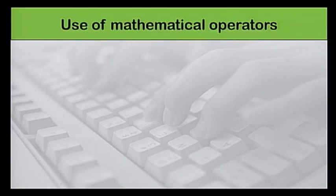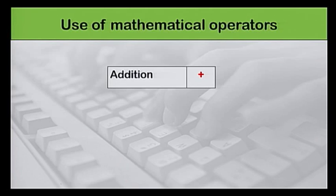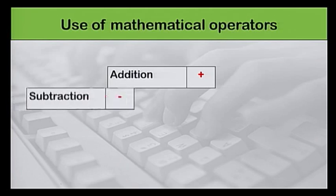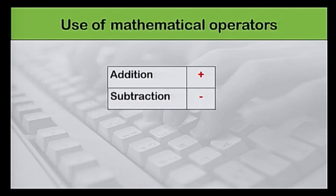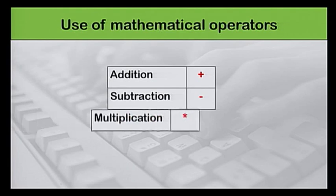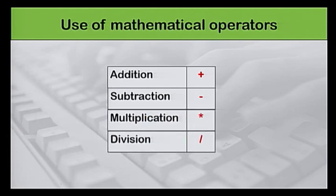Excel uses standard operators for formulae, such as a plus sign for addition, a minus sign for subtraction, an asterisk for multiplication, and a forward slash for division.